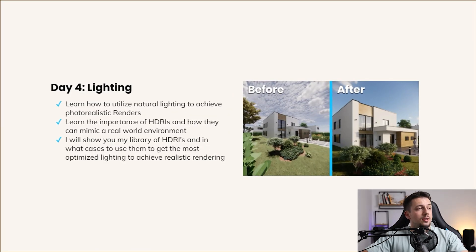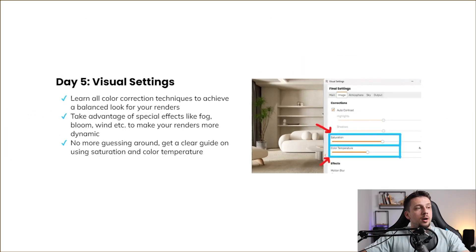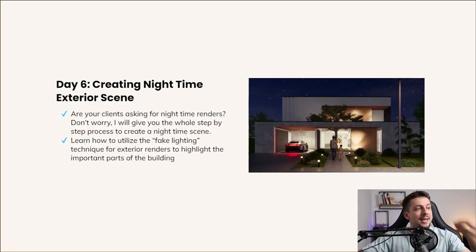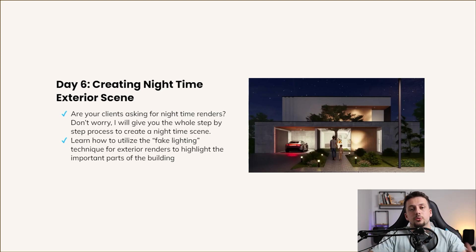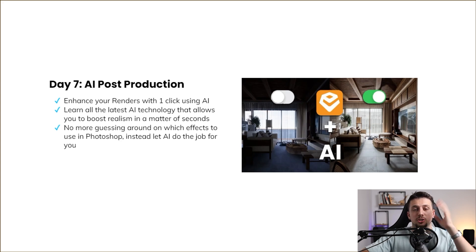Then you will learn how to set up lighting. On day four you'll learn the importance of HDRIs, how to use natural lighting to achieve photorealistic renders, and how to set up interior and exterior lighting — because this program covers both exteriors and interiors, which most programs don't. I'll also show you my library of HDRIs and the best ones you can find online. Then we'll cover visual settings — all color correction techniques to achieve a balanced look, plus effects like fog, wind, and bloom to make the render more dynamic. On day six you'll learn how to create a nighttime scene, which clients often request.